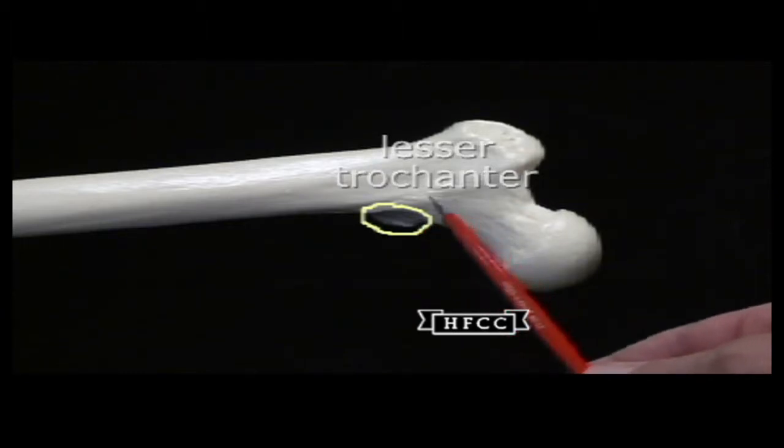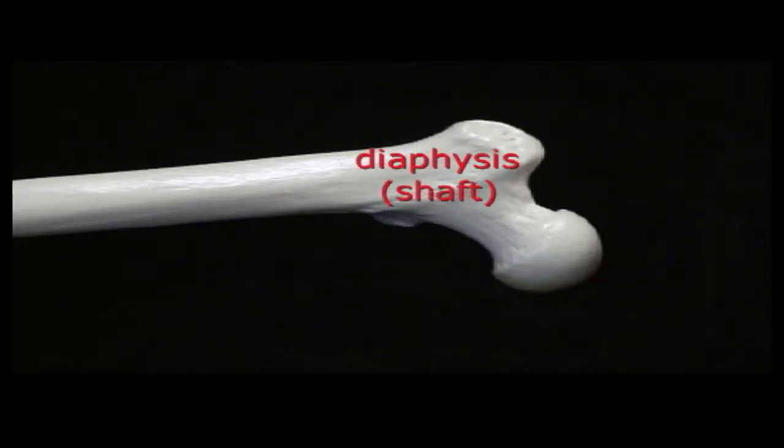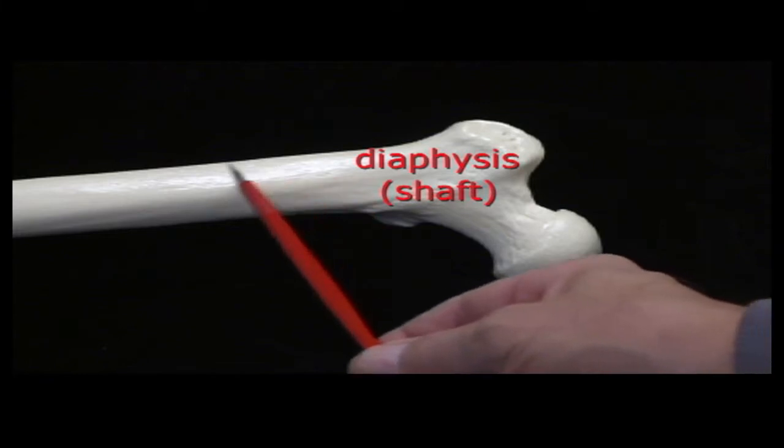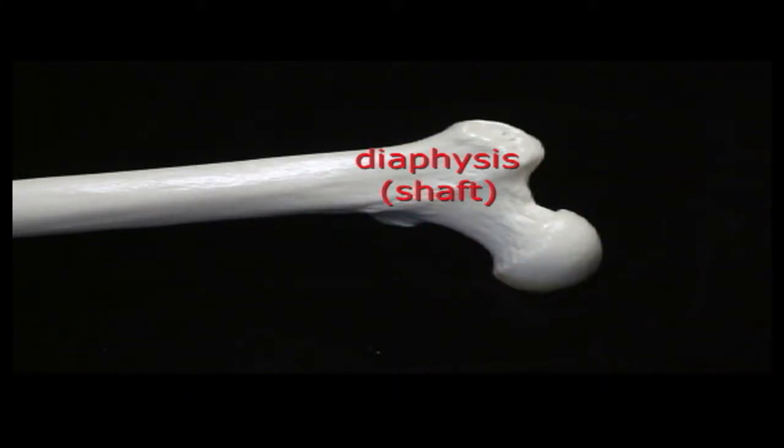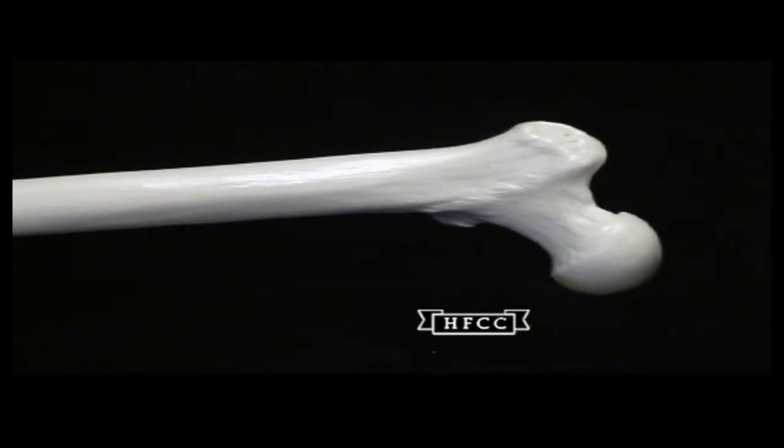These trochanters will serve for muscle attachments. Then the diaphysis or shaft, again on all long bones, having that tubular structure called the shaft.